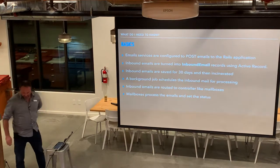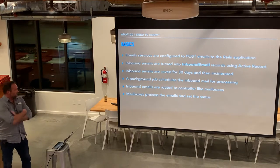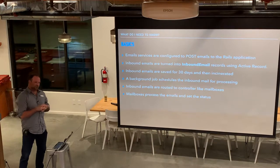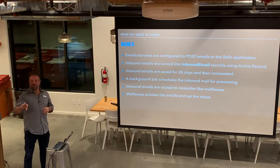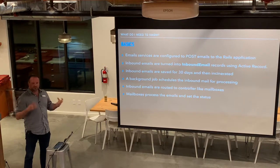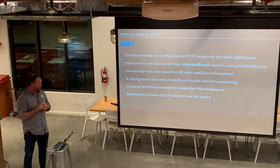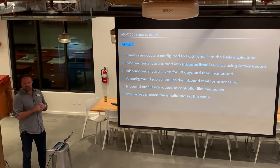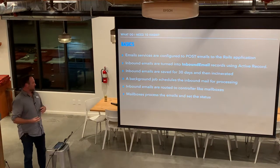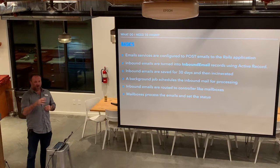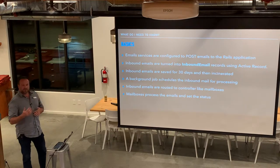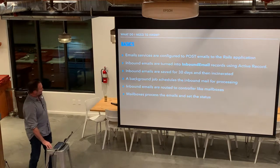The core idea you need to know is: you configure these different email services, and they're going to ultimately POST the email to your Rails app. It creates an inbound email object and stores it in Active Storage, keeps it there for 30 days. You have this inbound email object that you can work with to route it to different mailboxes, and in those different mailboxes, you can process the email.